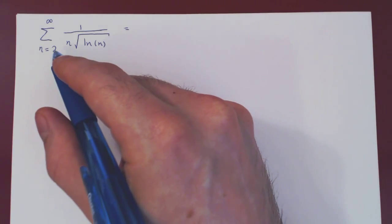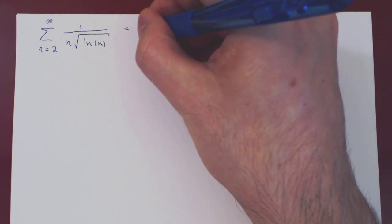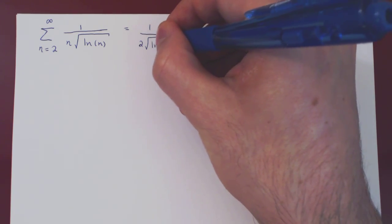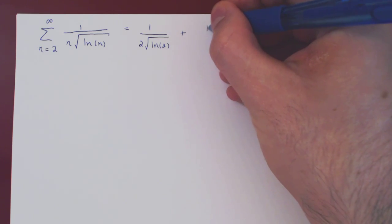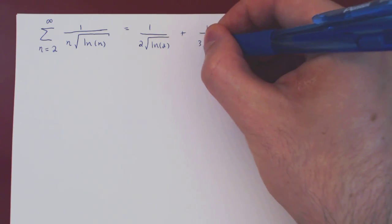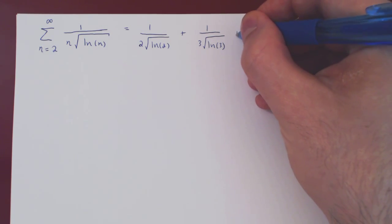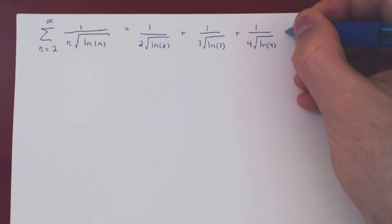So we begin here with summing when n is 2, so we have 1 over 2 the root of ln of 2, plus when n is 3, 1 over 3 square root of ln of 3, let's do one more, plus 1 over when n is 4, root of ln of 4, and so forth.